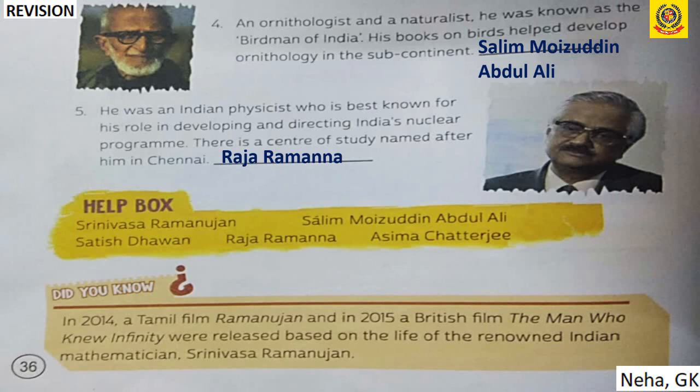Did You Know: In 2014, a Tamil film Ramanujan and in 2015, a British film The Man Who Knew Infinity were released, both based on the life of renowned Indian mathematician Srinivasa Ramanujan.